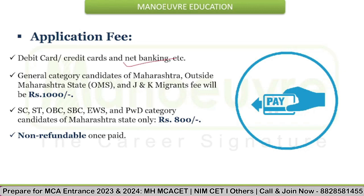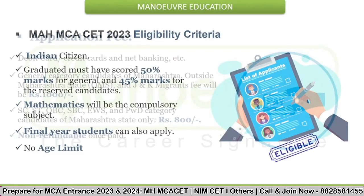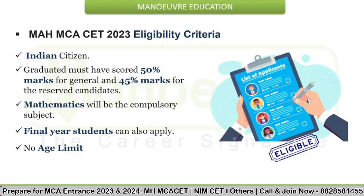Regarding application fees: online fee payment gateways will be debit card, credit card, and net banking. For general category candidates of Maharashtra, outside Maharashtra, and Jammu & Kashmir migrants, the fee will be ₹1000. For SC, ST, OBC, EWS, and PWD category candidates of Maharashtra, the fee will be ₹800. The fees will be non-refundable once paid — once you pay the fees, they will not be refunded.